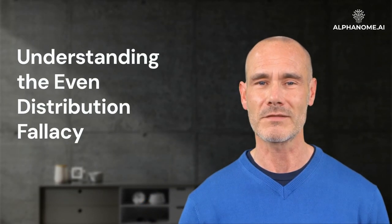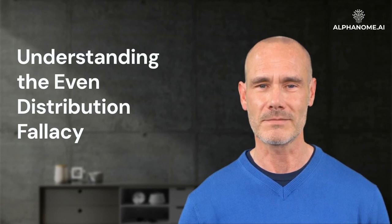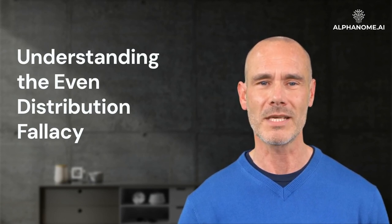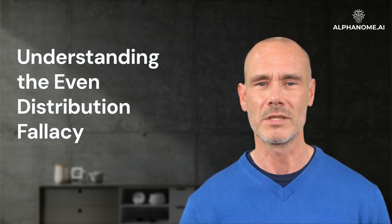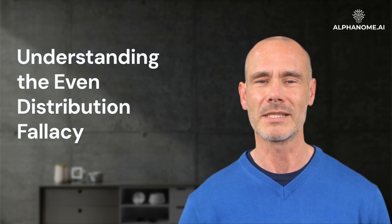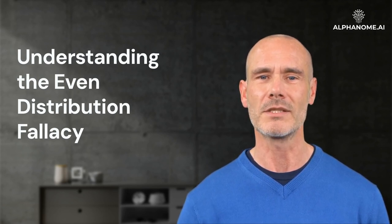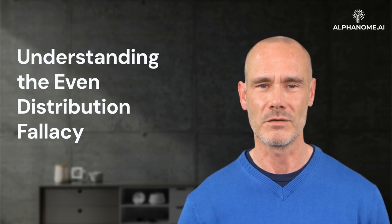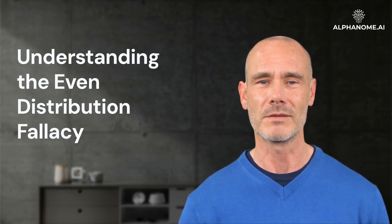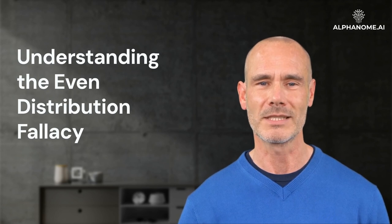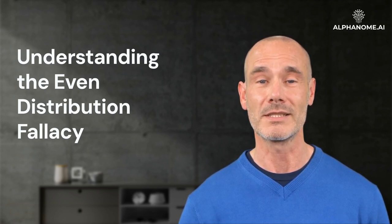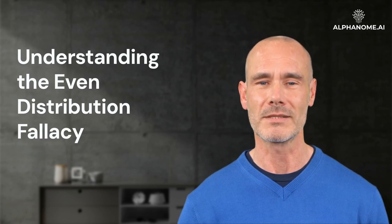At its core, the even distribution fallacy is about oversimplification. It's the mistaken belief that outcomes or characteristics observed at a macro level will uniformly apply at a micro level. In the context of investing, this fallacy can manifest in several ways, often leading to suboptimal investment decisions.